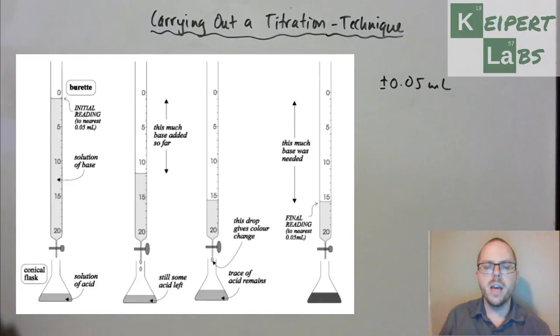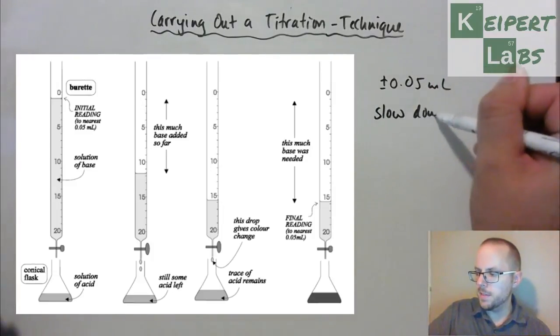So recording that initial value, and then we open up the tap. We dispense some of the base in this case, out of the bottom of the burette, into the flask, we swirl it, and we observe some colour changing going on. Now it hasn't reached the point of the equivalence point, so what we notice is we see a quick colour change that disappears straight away, as the reactant mixture is swirled. And then as we get closer and closer, as we've dispensed more and more, what we do is we slow down our dispensing.